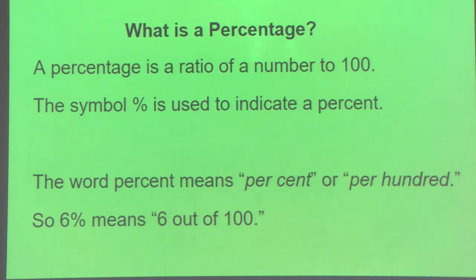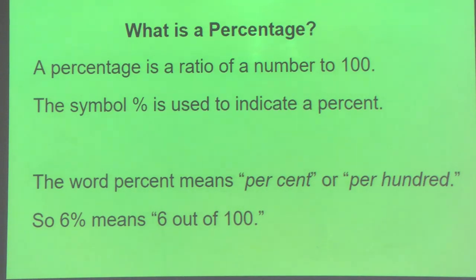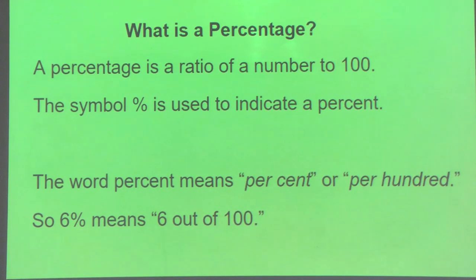So what is a percentage? A percentage is a ratio of a number to 100. A ratio is another way to say fraction, so it's a number over 100. The percent symbol is used to indicate the percent. The word percent literally means per cent, or per hundred. So six percent means six out of 100.